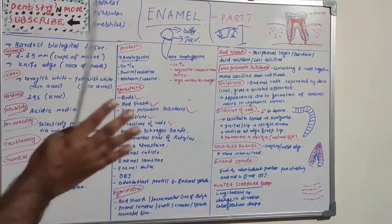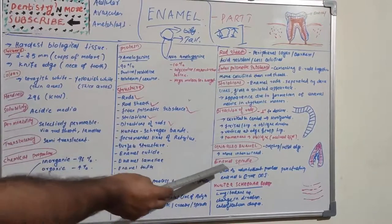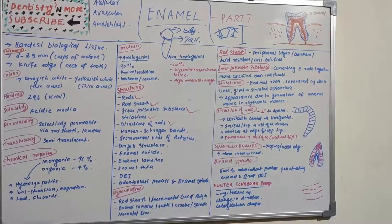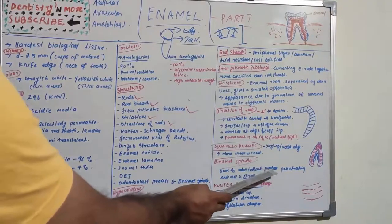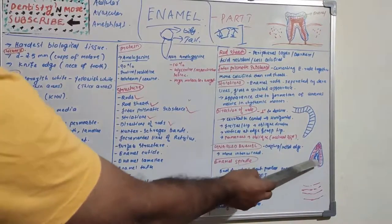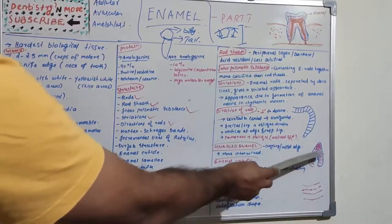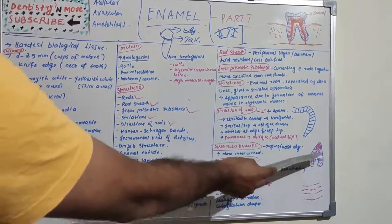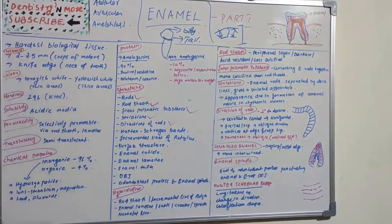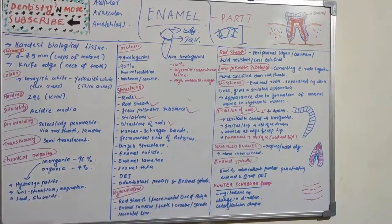Enamel spindles are the ends of odontoblastic processes that penetrate through the dentino-enamel junction into the enamel. These odontoblastic processes from the dentine side pass through the DEJ and are known as enamel spindles.